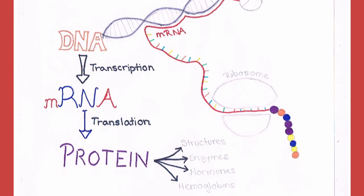The first one, which takes place inside the nucleus, is called transcription. During transcription, the DNA information is copied into messenger RNA by the RNA polymerase.